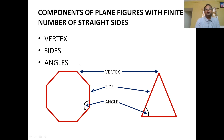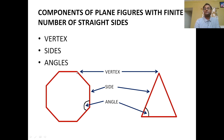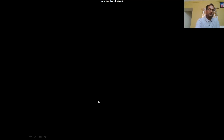Now let us know some components of plane figures or polygons. These polygons have three things: vertex, sides, and angles. A straight edge or straight boundary is called a side. Wherever two sides meet, that point is called a vertex. The degree measure between two sides is called an angle.